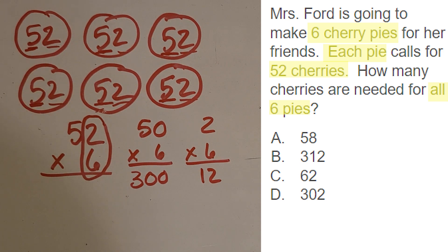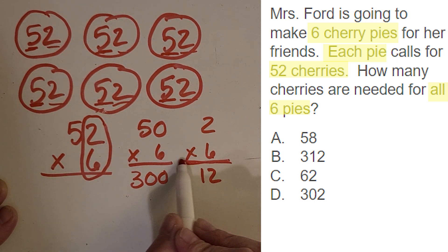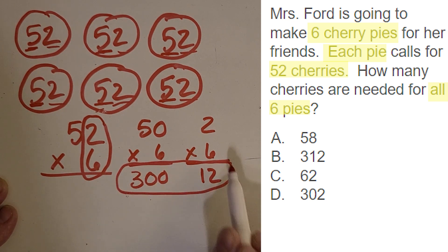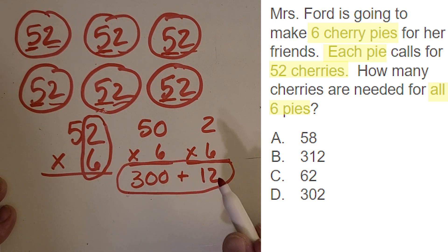Then what do you think I do with these two? These are called partial products. These are two parts of the answer. So what do you think I do with these two numbers? You got it. We add them. And I really like this, that it's such a friendly number. 300 plus 12 is 312. You guessed it.